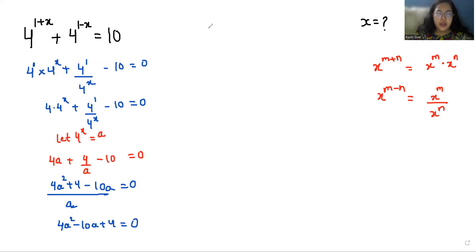Now it looks like a quadratic equation. We can do the middle term split and write this -10a as -8a - 2a plus 4 equals 0. From the first two terms, I can take 4a as common, so a minus 2.